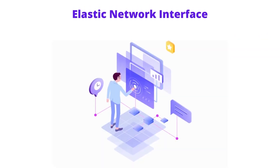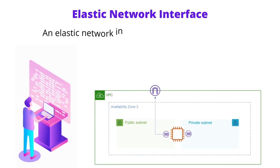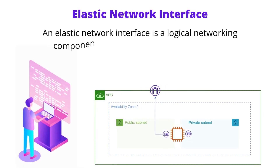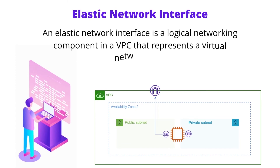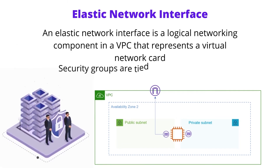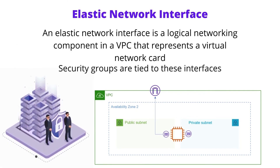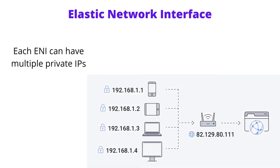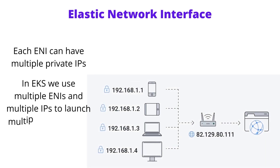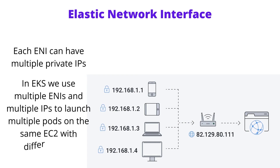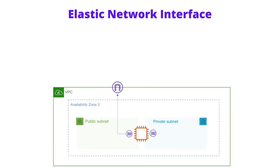Elastic Network Interface: an elastic network interface is a logical networking component in a VPC that represents a virtual network card. Security groups are tied to these interfaces. We can attach multiple interfaces to an instance, and each ENI can have multiple private IPs. In EKS, we use multiple ENIs and multiple IPs to launch multiple pods on the same EC2 with different IPs. Another use case is a dual-homed EC2.